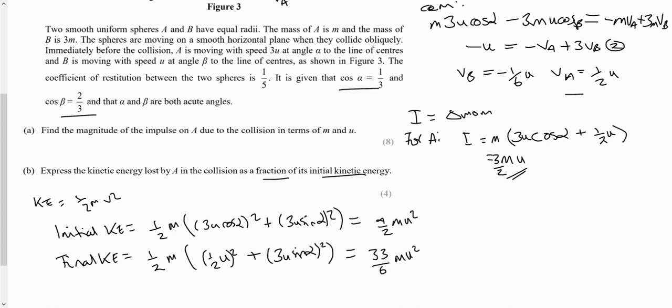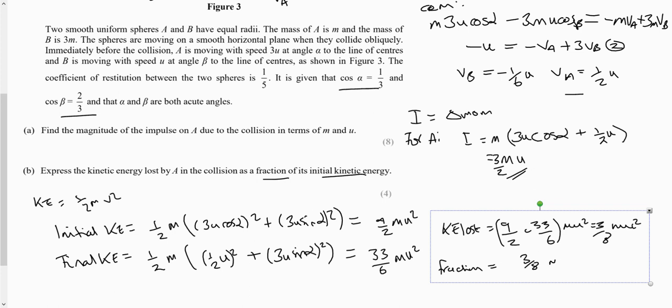Then we need to make sure we're going to answer the question. So we need our kinetic energy lost. And then we need to write that as a fraction of the initial, which is what they asked us to do. So our initial kinetic energy was 9 over 2mu squared. And so we get 1 12th is the final answer.